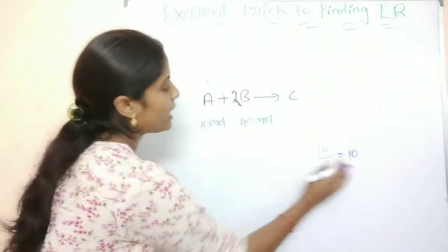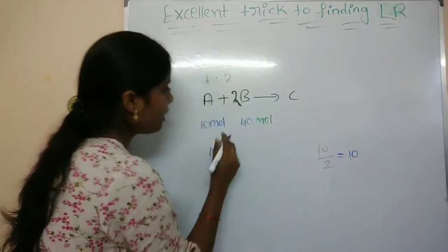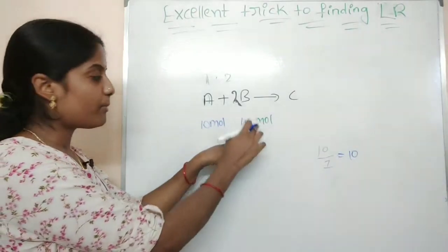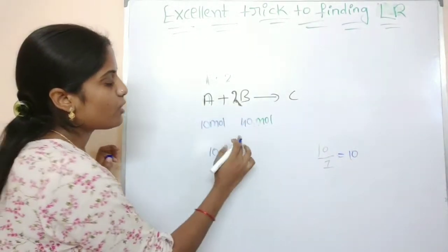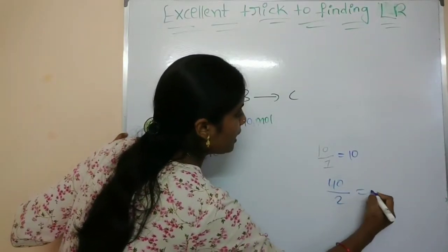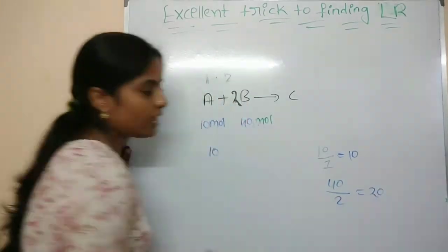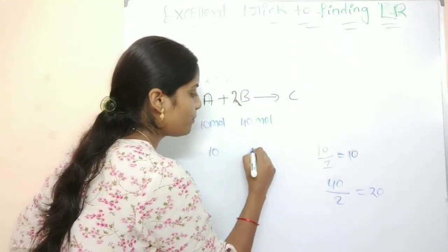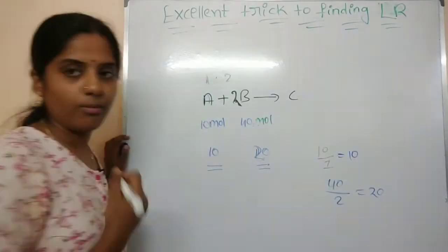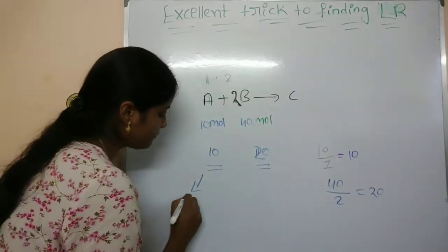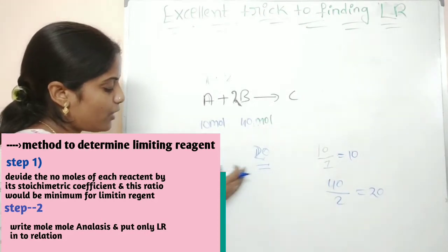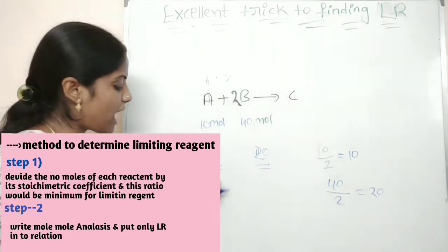For B, we have 40 moles and its stoichiometric coefficient is 2. So B equals 40 divided by 2, which is 20. Now of the two values, the A value is minimum — that is why A is the limiting reagent.